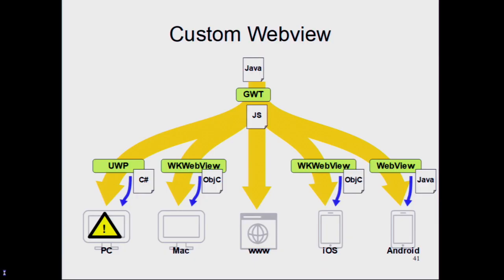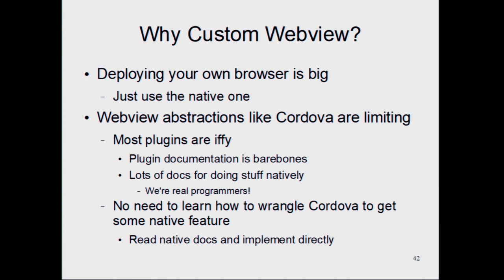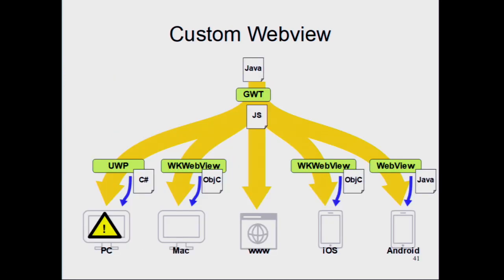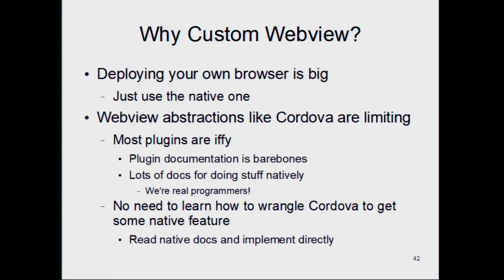Finally, I'll talk about making a custom web view. There are web browsers already on all these platforms, so instead of packaging your own web browser with Electron or using Cordova, you can just write your own native code to open up a web browser and load your code into it. On PC and Mac you don't really want to push around Electron because it's pretty big. You can have smaller apps if you just use whatever browser is already on Windows or Mac. And on iOS and Android, Cordova is a pain to use, so why not just write your own code instead?